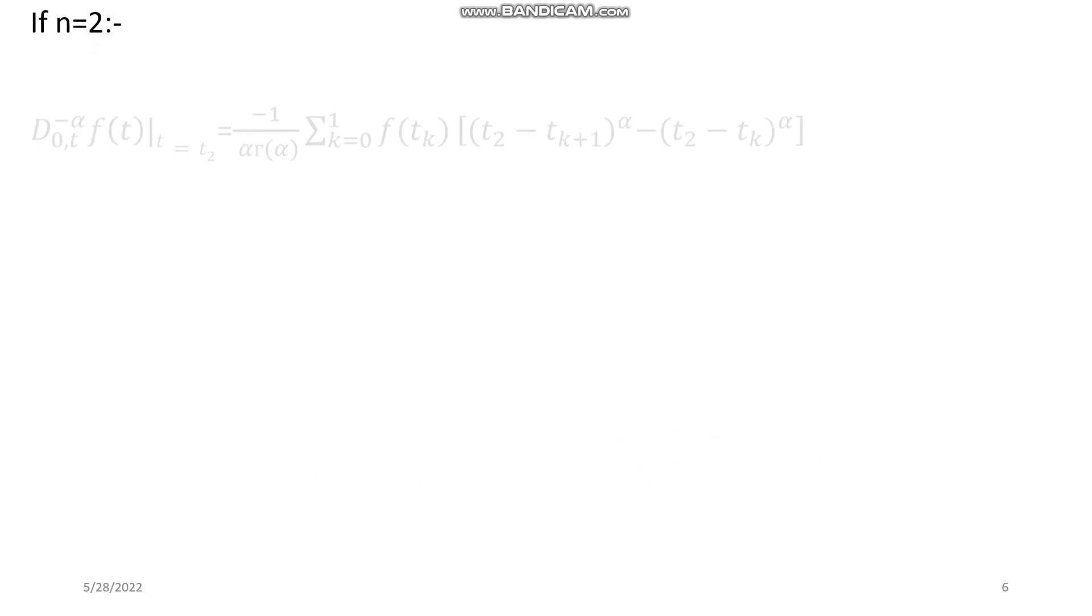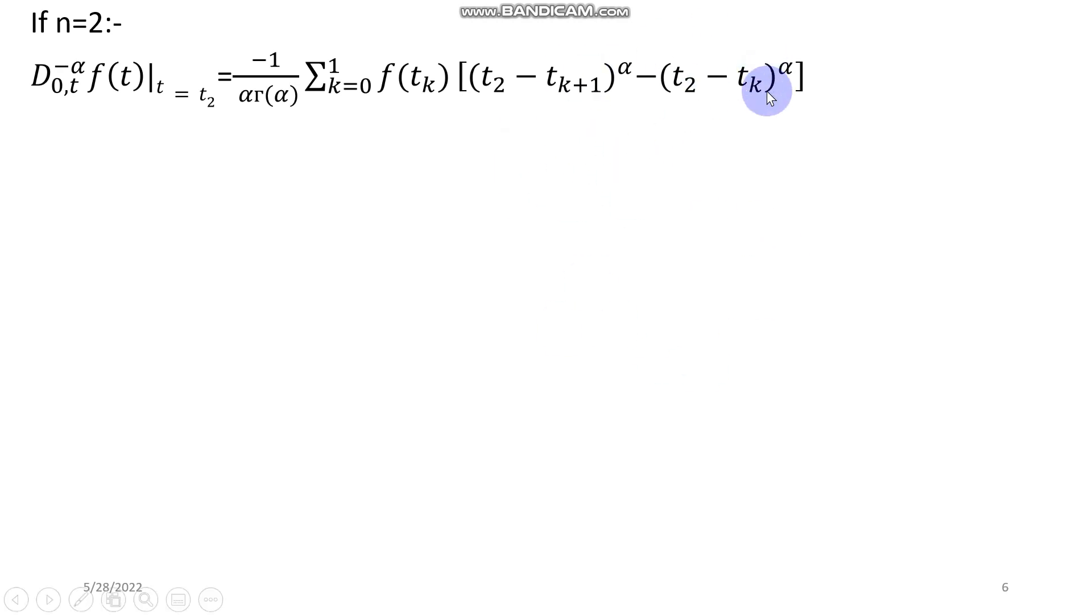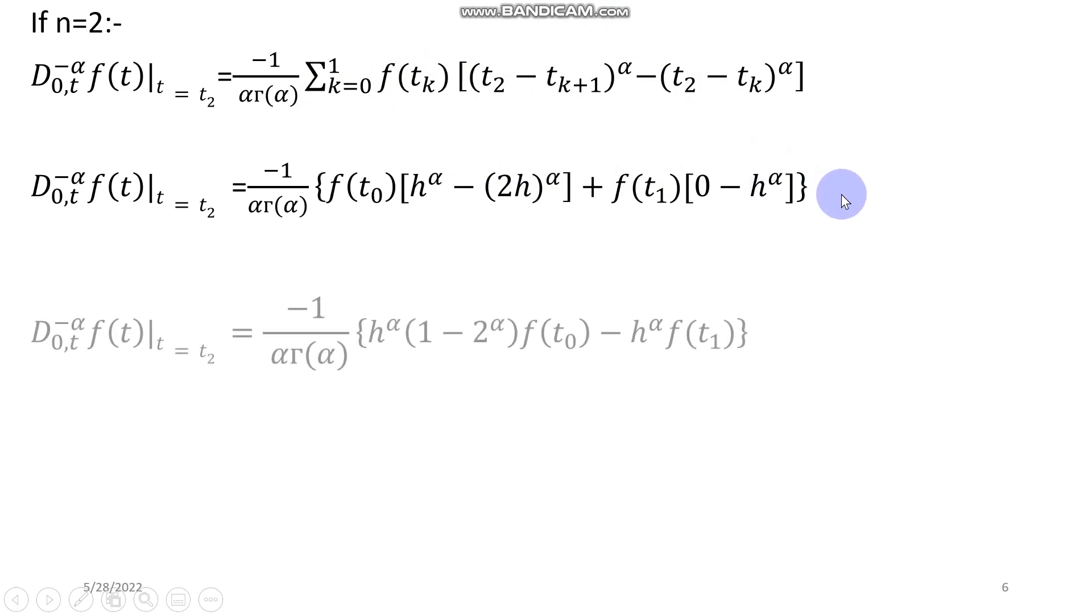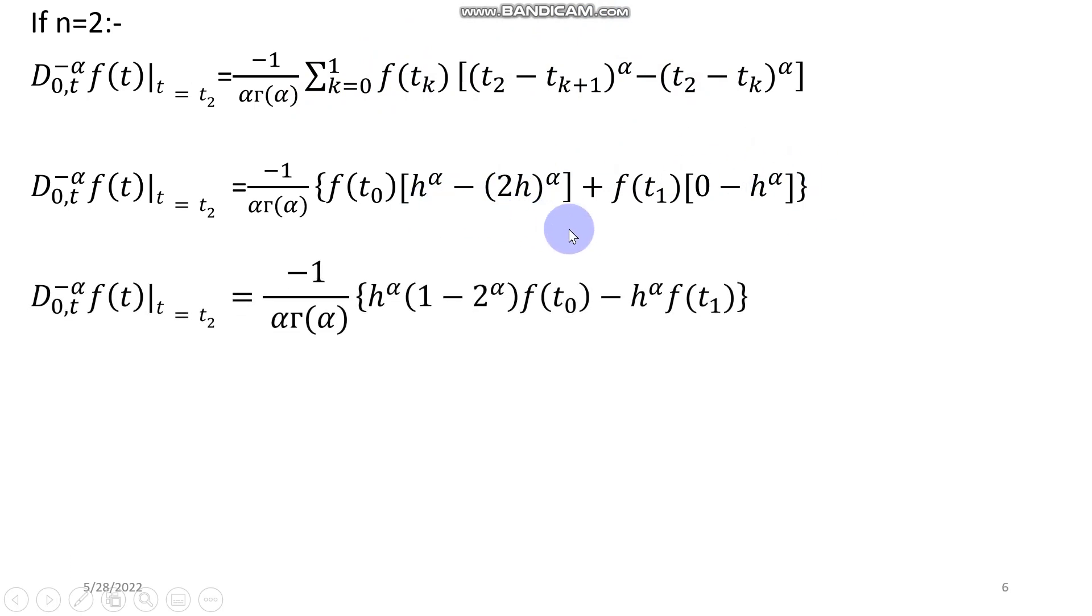If I put n equal to 2, then this equation is obtained from one of the previous steps. Finally, when you put k equal to 0 in the entire expression plus k equal to 1 in the whole expression, it will give you this step. Then little simplification will yield this step.